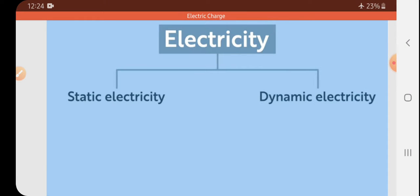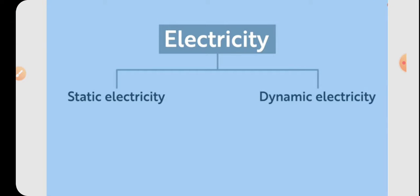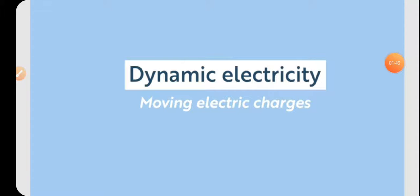Whereas dynamic electricity is a moving electricity means in which the electric charges move from one place to another. So the dynamic electricity we are going to study in this chapter.